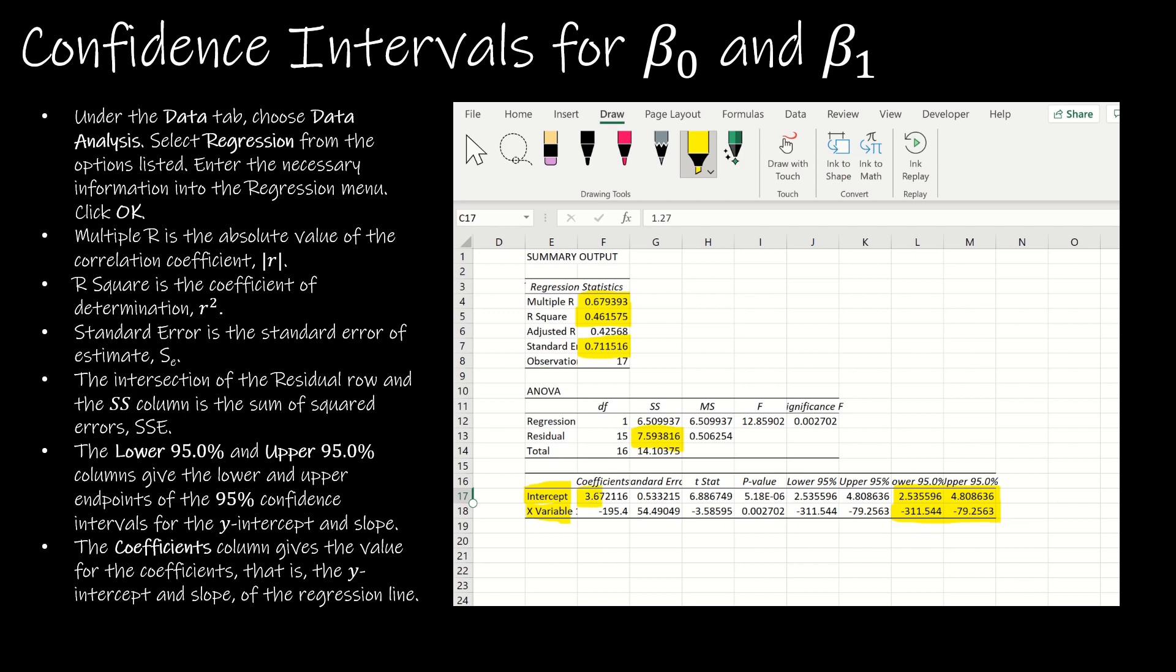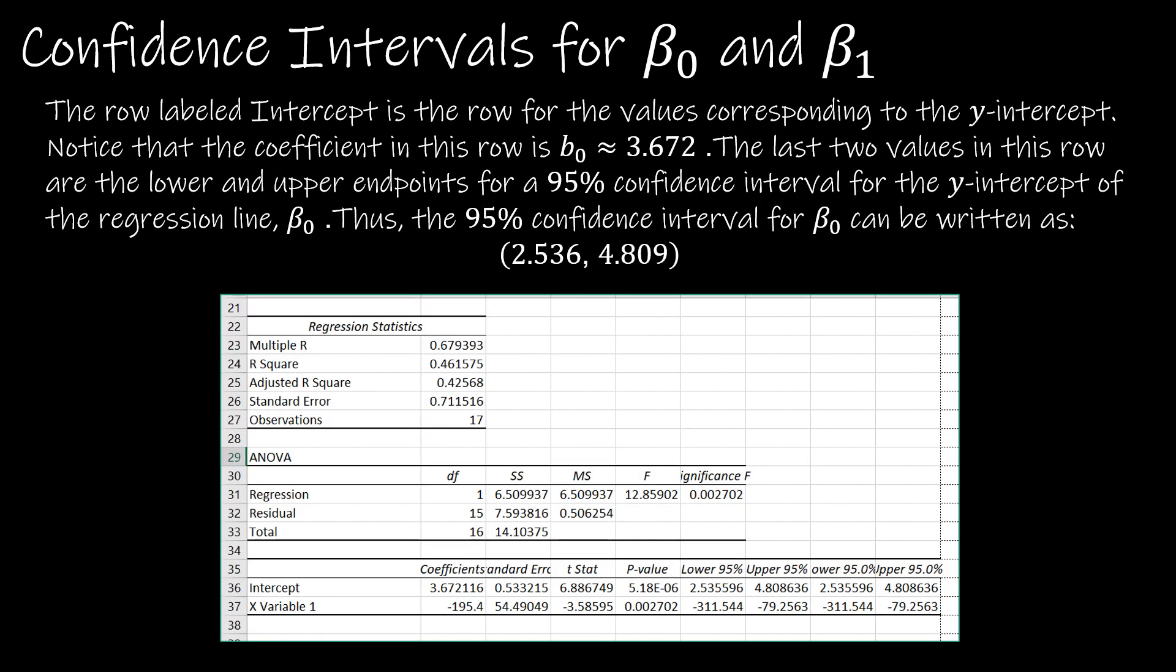And then, of course, there's also the coefficients, and these coefficients are the two that would create our regression equation. So I would say that ŷ is equal to 3.672 minus 195.4x. That negative would indicate that the actual correlation coefficient is negative.